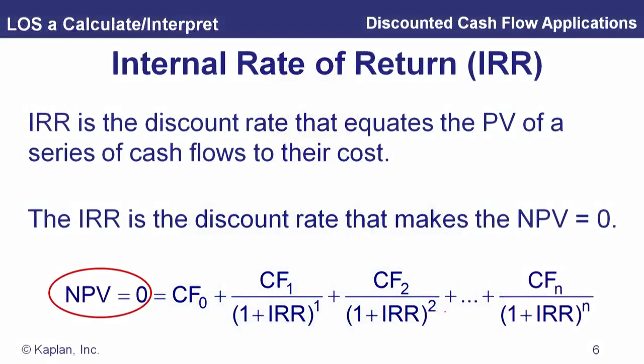A related concept is internal rate of return. Net present value is in dollars or euros — some measure of value — while the internal rate of return is in percent. It's defined as the discount rate that equates the present value of a series of cash flows to their cost. That is, it's the discount rate that makes the net present value zero, so the present value of the initial outlay just equals the present value of those future cash flows. We solve for IRR using the financial calculator.